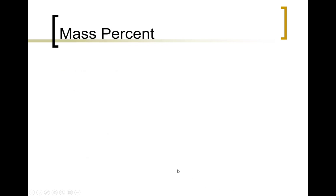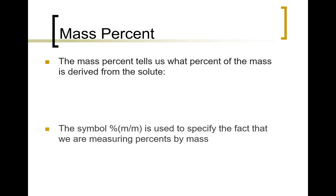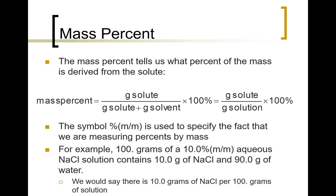The mass percent is going to tell you, for every 100 grams of the solution, how much of it is solute. And the way we calculate it is we would say, all right, let's take the grams of solute divided by the sum of the grams of solute plus the grams of solvent. What do we call the solute plus the solvent? We call it the solution.